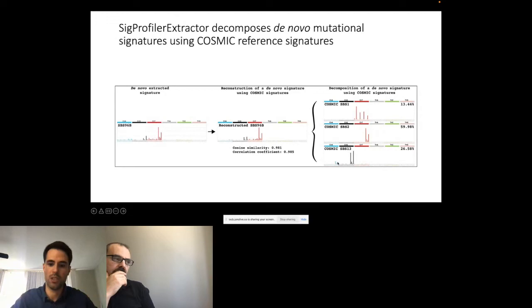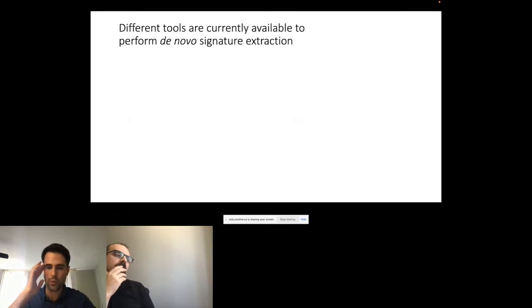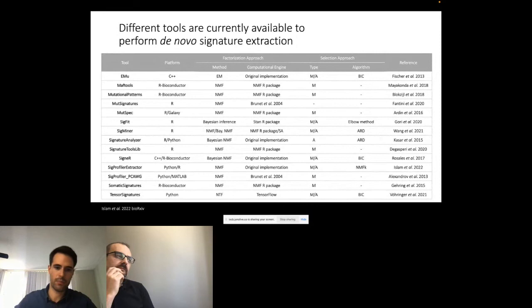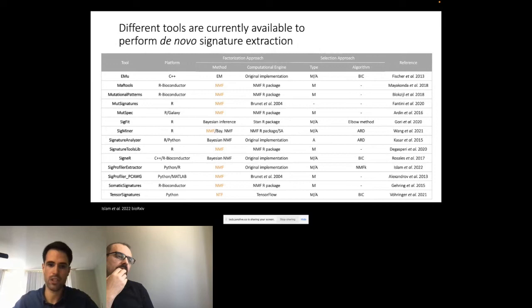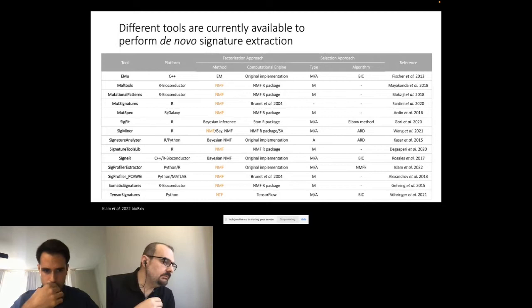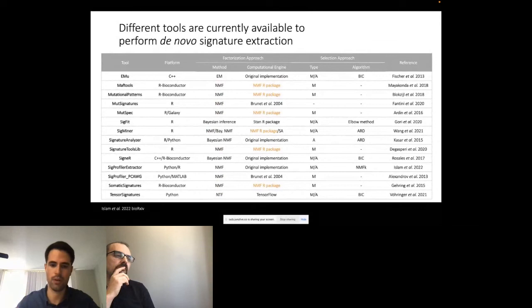This is how the tool works. For benchmarking, we took every single tool available in the literature for performing signature analysis. This table summarizes all the tools — most of them are related to NMF or different variants of this methodology. Interestingly, up to six of them are actually using the same computational engine rather than deriving an original implementation as we and others did.